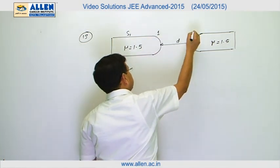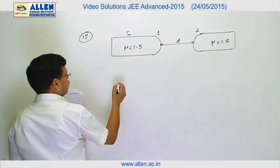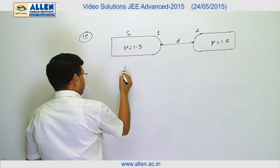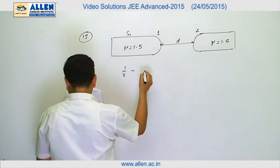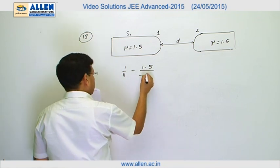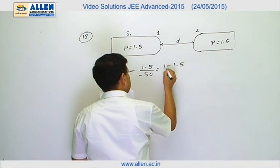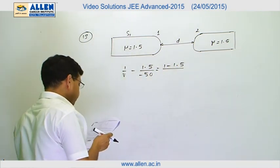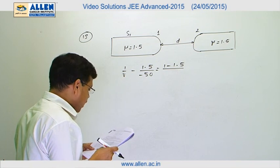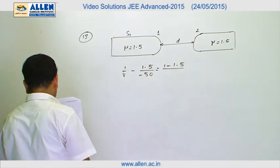So, let us take this as the first surface and this as the second surface. And for first surface, we will write 1 by V minus 1.5 divided by minus 50 is equal to 1 minus 1.5, and their radii are given to be 10 centimeter each. Both the surfaces have 10 centimeter radius.